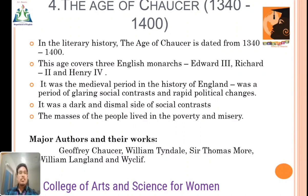Age of Chaucer. It starts in 1342 to 1400. In literary history, the age of Chaucer is dated from 1342 to 1400. The age covers three English monarchs — especially Edward III, Richard II, and Henry IV. It was a medieval period in the history of England, a period of glaring social contrast and rapid political changes. It was a dark and dismal side of social contrast, with the mass of the people living in poverty and misery. Major authors of this era are Geoffrey Chaucer, William Tyndale, Sir Thomas More, William Langland, and John Wycliffe.